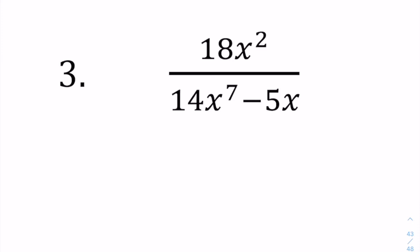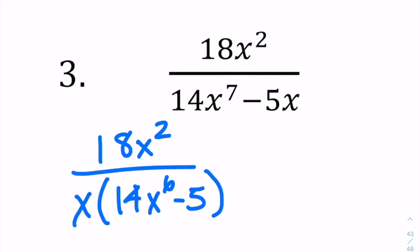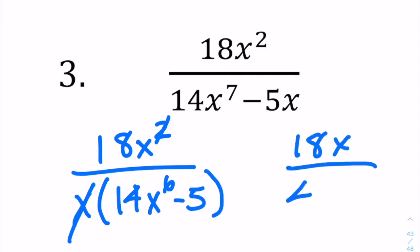We've got 18x squared over (14x to the 7th minus 5x). The numerator is a monomial, so we leave that. For the denominator, nothing with the coefficients will factor out, but we can pull out an x, leaving us with x times (14x to the 6th minus 5). We can cancel one factor of x from numerator and denominator, leaving 18x over (14x to the 6th minus 5).